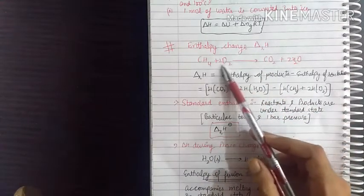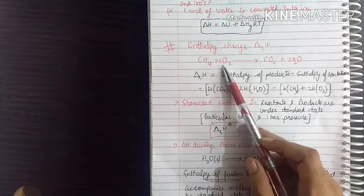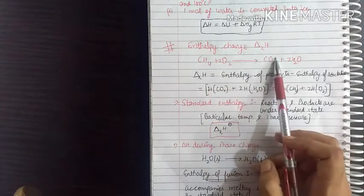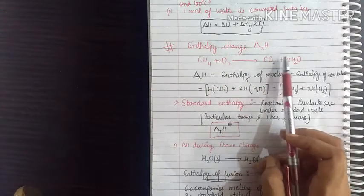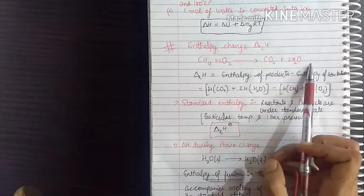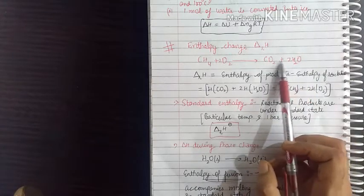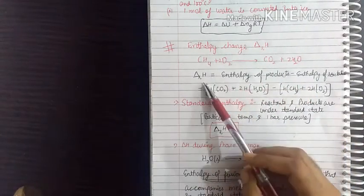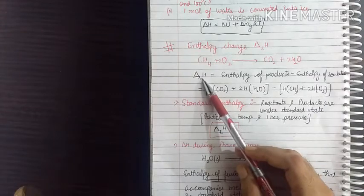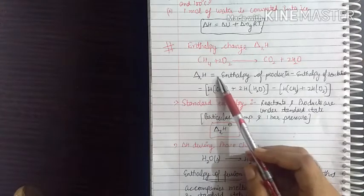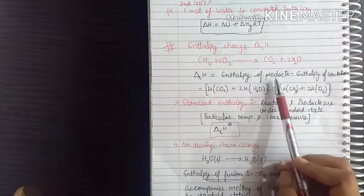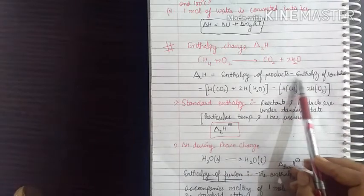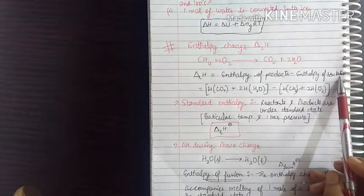To illustrate enthalpy change during reaction, suppose we discuss methane combustion in the presence of oxygen, producing carbon dioxide and water as products. You have to balance this equation. The enthalpy change during reaction is equal to the enthalpy of products minus the enthalpy of reactants.